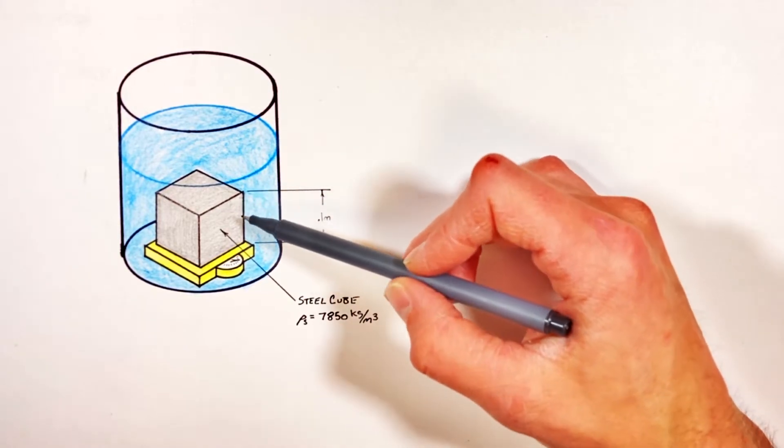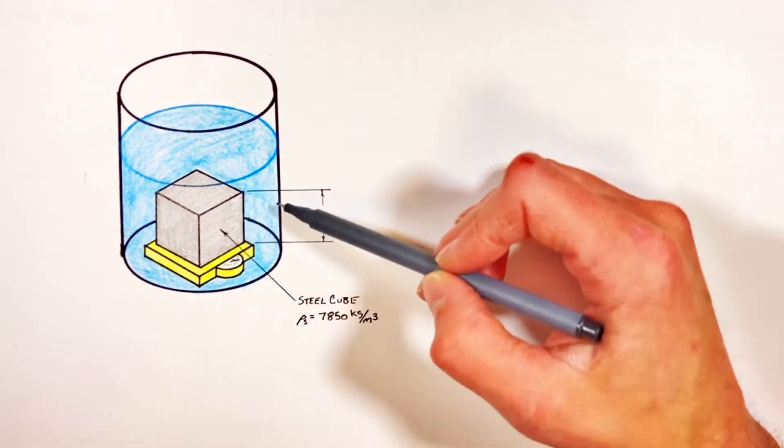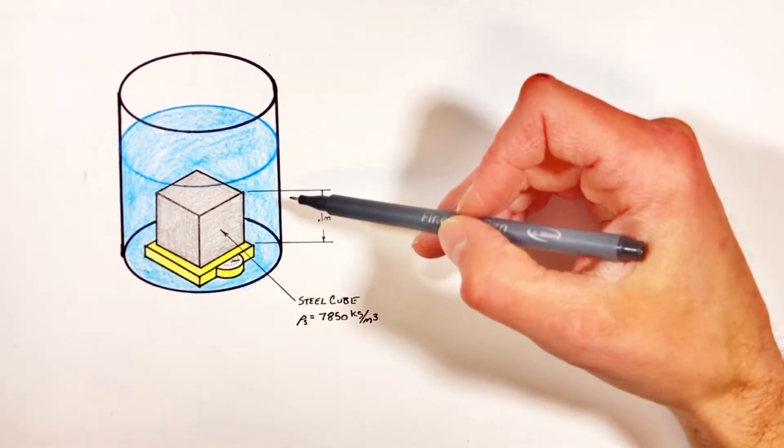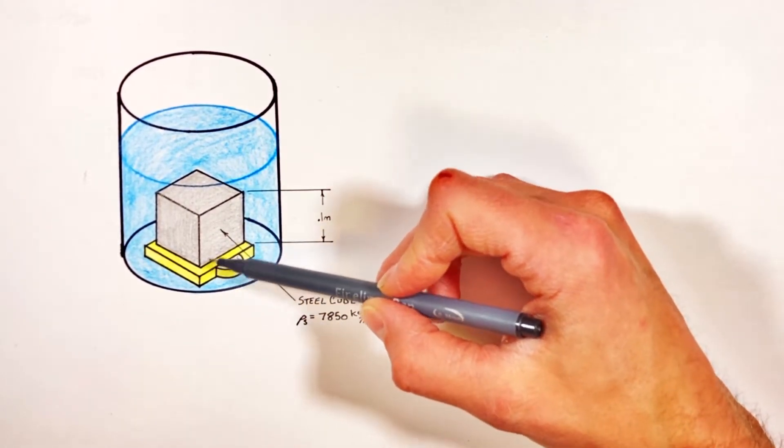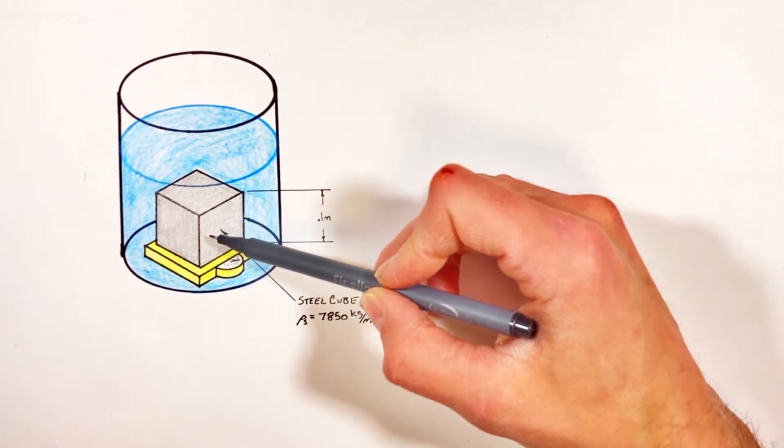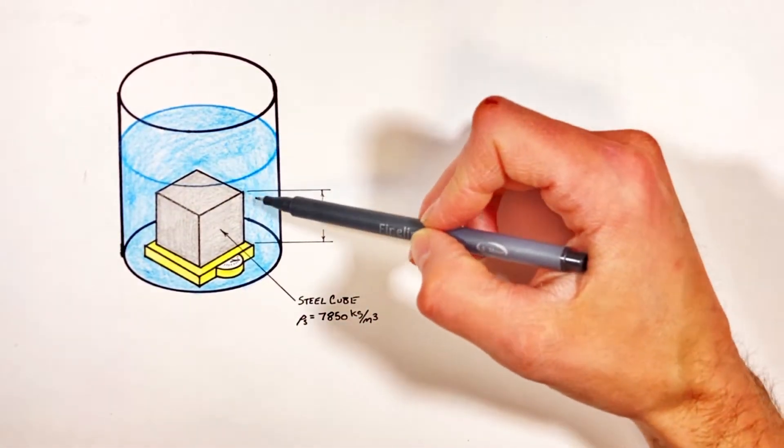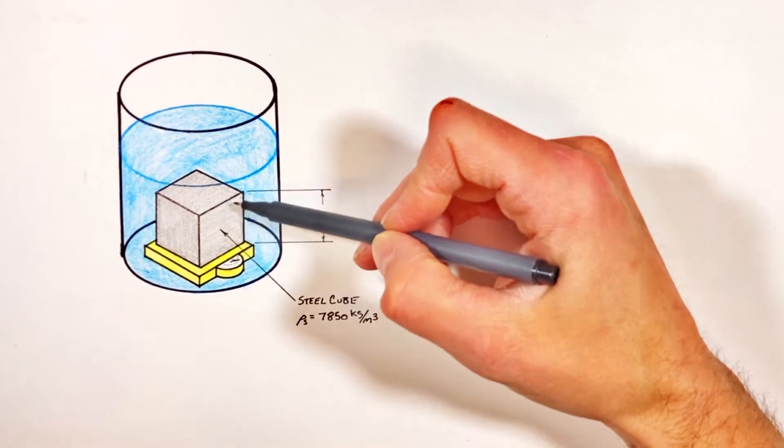But I promise you, you can't swing a dead cat without hitting at least 10 physics books with this problem in it. So what we're going to do in this problem is solve for the reading of the scale, really how hard the scale is having to push upward on this cube even though it's immersed in the water.